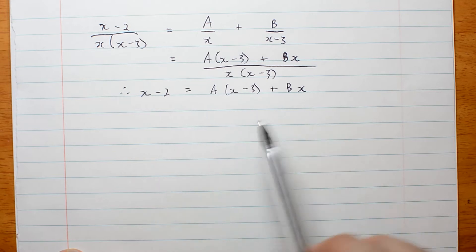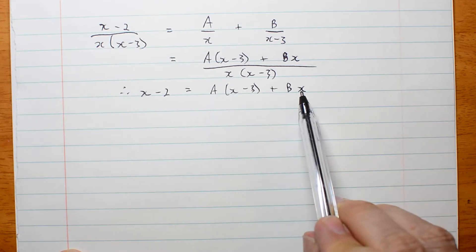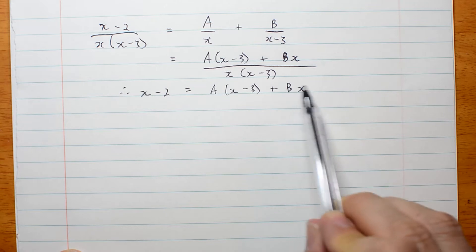And again, I could work it all out and do simultaneous equations, but there's a quicker way. If I make this 0, I eliminate a and can solve for b. And if I make this 0, I can eliminate b and solve for a.